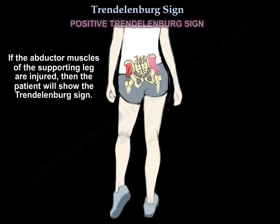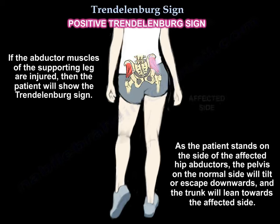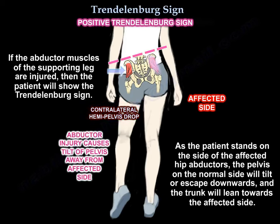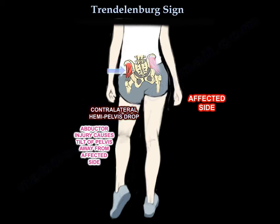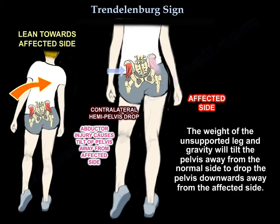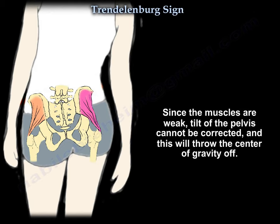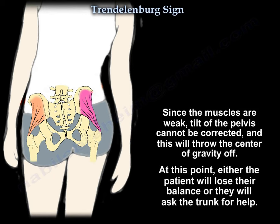If the abductor muscles of the supporting leg are injured, the patient will show the Trendelenburg sign. As the patient stands on the side of the affected hip abductors, the pelvis on the normal side will tilt or drop downwards, and the trunk will lean towards the affected side. The weight of the unsupported leg and gravity will tilt the pelvis away from the affected side. Since the muscles are weak, the tilt of the pelvis cannot be corrected, and this will throw the center of gravity off — causing the patient to either lose their balance or recruit the trunk for help.